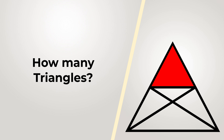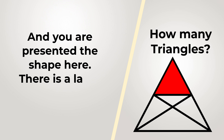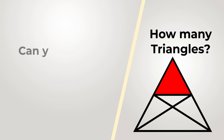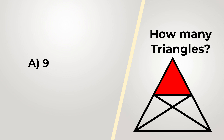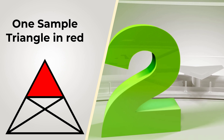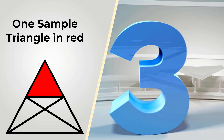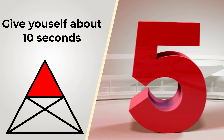How many triangles do you see? You're presented with a shape on the left — there is a large triangle and there are also lines inside. You have four different choices: choice A is nine triangles, choice B is 12, choice C is 17, and choice D is 24. One triangle is highlighted in red but there are a lot of other triangles. Give yourself 10 to 15 seconds — that's about as much time as you'll get on the real test.